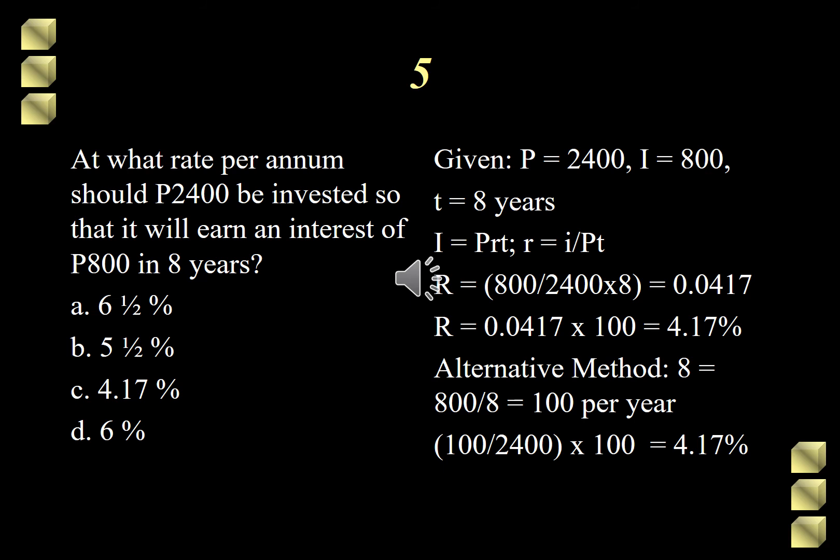We will recall our lesson on simple interest. We are asked of the rate or the interest rate, and obviously it's in percentage. The formula in finding the interest is I equals PRT. With that, we can solve for the other variables like P, R, or T. Given a principal of 2,400, interest of 800, and the time is 8 years. Interest is different from the interest rate.